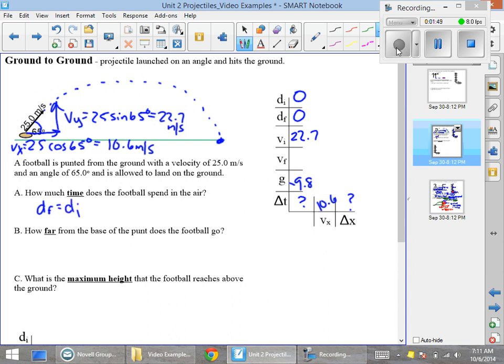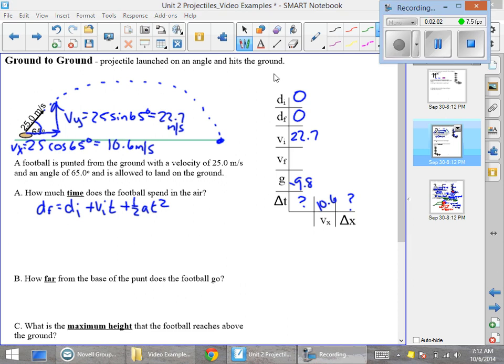So df equals di plus vi t plus 1 half a t squared. So I will start putting that in. We're going to plug our numbers into the df equation here: 0 equals 0 plus 22.7t minus 4.9t squared.